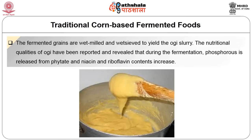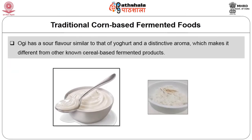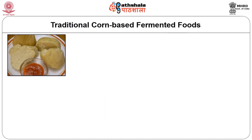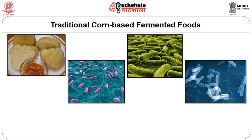The fermented grains are wet-milled to yield the Ogi slurry. Nutritional studies of Ogi have revealed that during fermentation, phosphorus is released from phytate and it is found to be a rich source of niacin, with riboflavin content also increasing. Ogi has a sour flavour similar to that of yogurt and a distinctive aroma which makes it different from other known cereal-based fermented products.